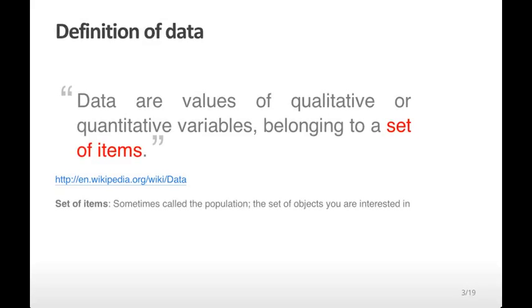So first of all, a set of items. In a statistics class, this is sometimes called the population. This is the set of objects that you are interested in studying. In a clinical study, it might be a set of patients. Or it could be the set of visits to a website. Or it could be all the cars that come out of a particular factory that you want to measure for durability.